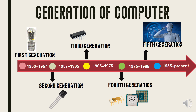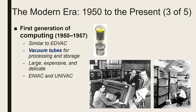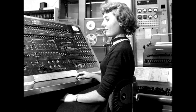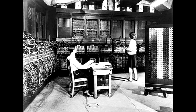Computers during 1950 to 1957 were considered the first generation of computers. Similar to EDVAC, these computers used vacuum tubes for processing and storage. These computers were very large, expensive, delicate, and required trained users and special environments. The UNIVAC and ENIAC are examples of first generation computers, and these types used a great deal of electricity and generated a lot of heat.